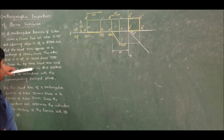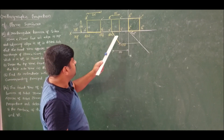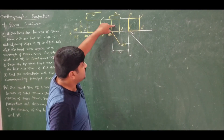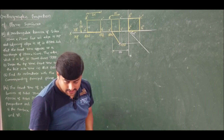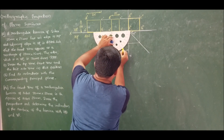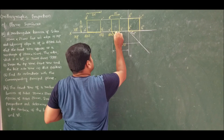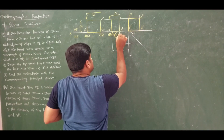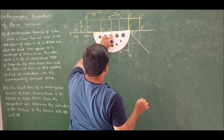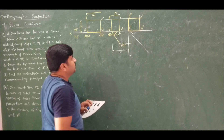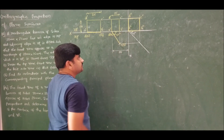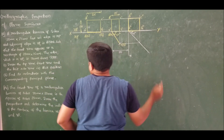He is asking to draw the top view, front view, and left side view, and then find the inclination with the corresponding principal plane. The question is: how much is the inclination with VP? Measuring that inclination, it is found to be 55 degrees. So this is the solution for problem number 13.